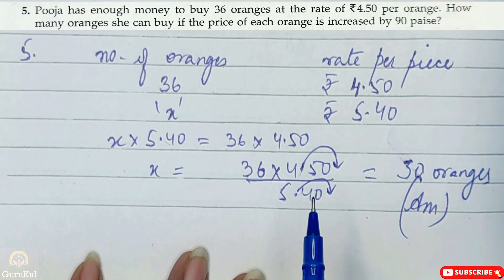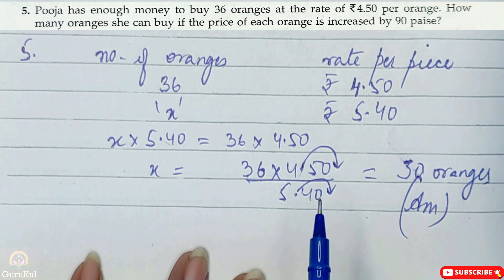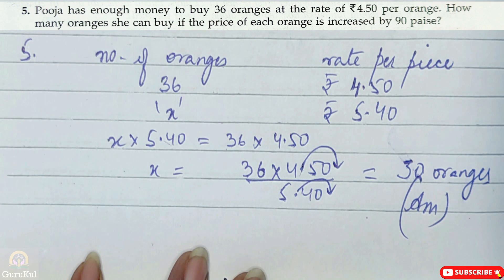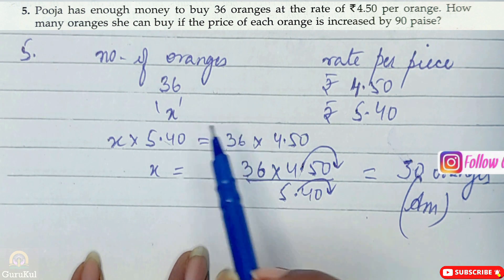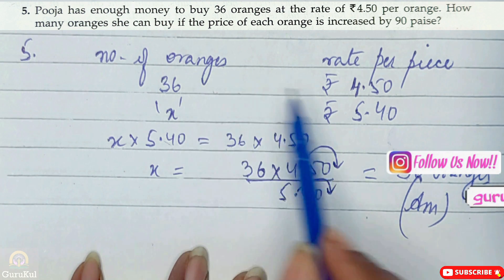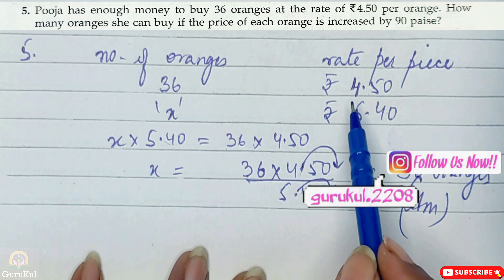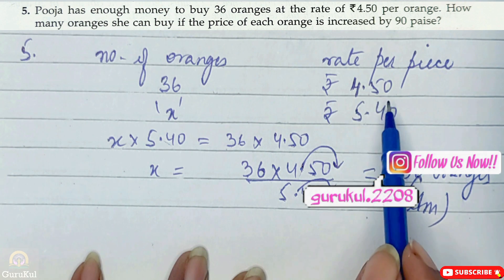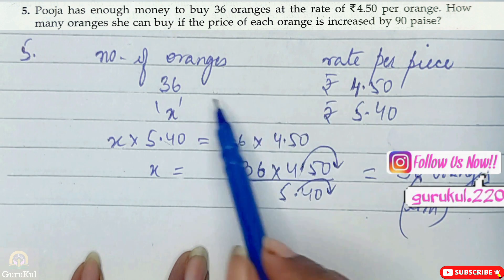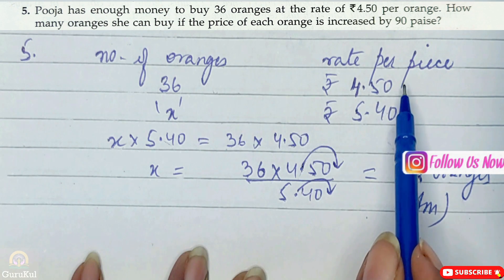Pooja has enough money to buy 36 oranges at the rate of Rs. 4.50 per orange. So 36 oranges she bought at the rate of Rs. 4.50, as you can see on the screen. Number of oranges times rate per piece.